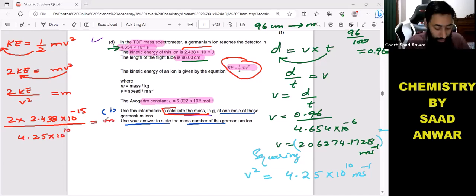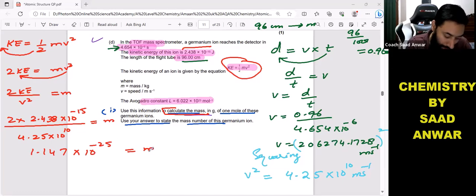So 2 times 2.438... I am using my calculator, I suggest you use your calculator and try to solve with me. The answer which I am getting is 1.147 times 10 raised to power minus 25. So this is the mass in kilograms. This is the mass per ion.